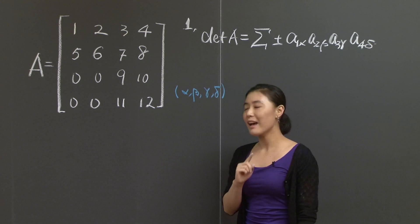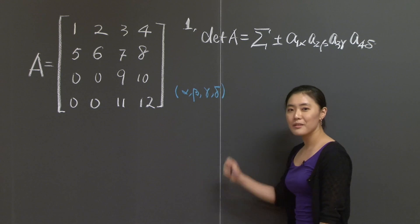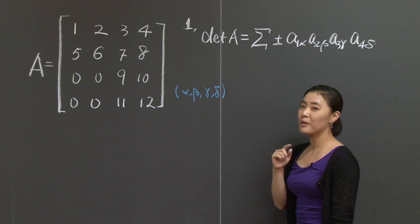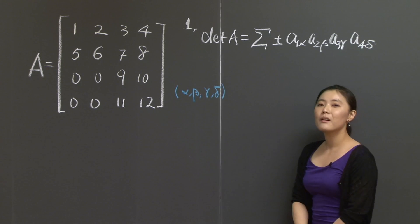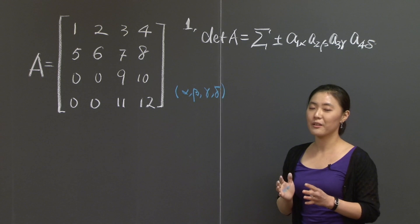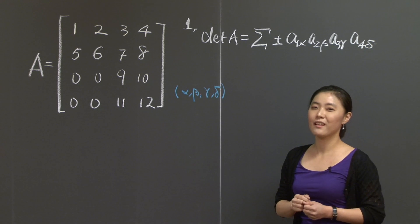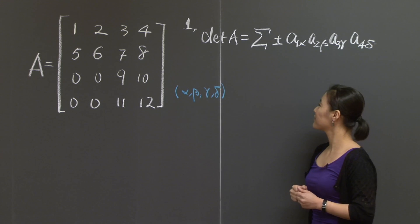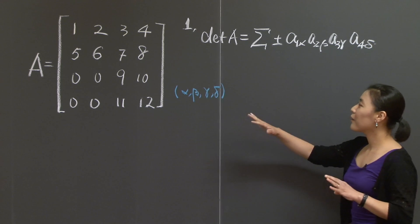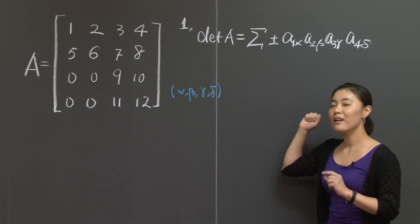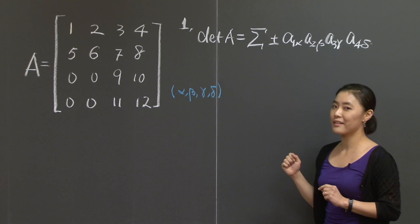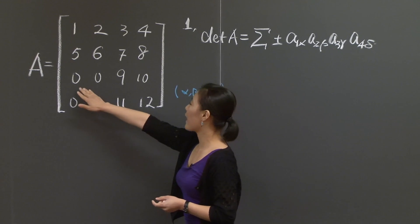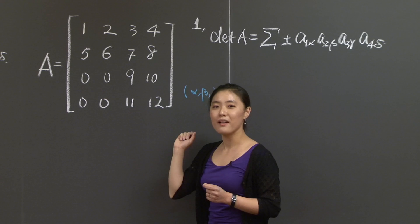But if you do it in that way, how many terms do you have to compute? This is a 4 by 4 matrix, so in general this sum will contain 4 factorial, which is 24 terms. That sounds time consuming. Can you do it in a faster way? Since we only care about non-zero terms in this sum, let's look at where 0 occurs in matrix A.